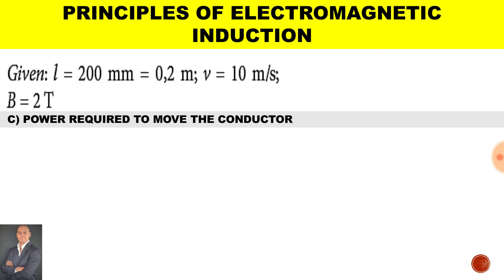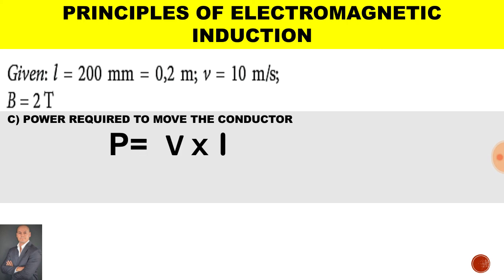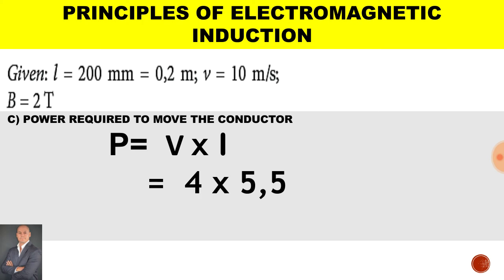To calculate the power required to move the conductor, it is equal to the voltage times the current. The EMF generated is 4 volts, multiplied by the current of 5.5 amps, and we end up with 22 watts.